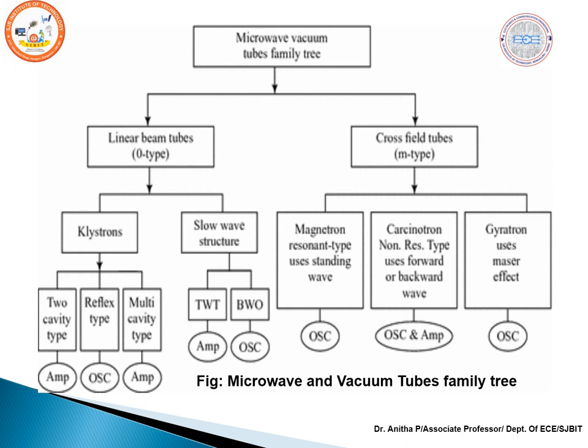In the previous session we saw that conventional tubes cannot be used at microwave frequencies. The limitations — inter-electrode capacitance, lead inductance, radiation losses, conductor and dielectric losses, and transit time effect — limit the gain-bandwidth product and restrict conventional tubes from operating in the gigahertz range.